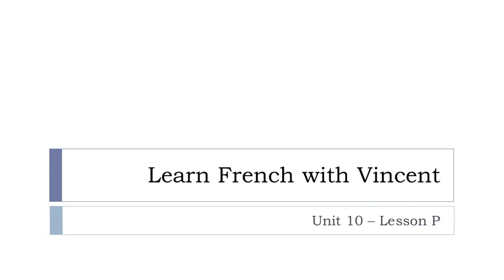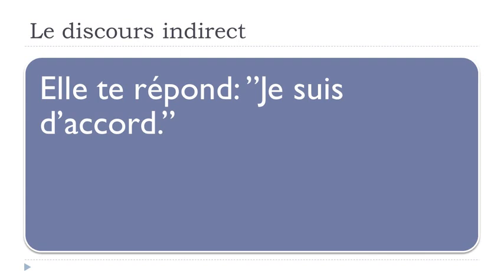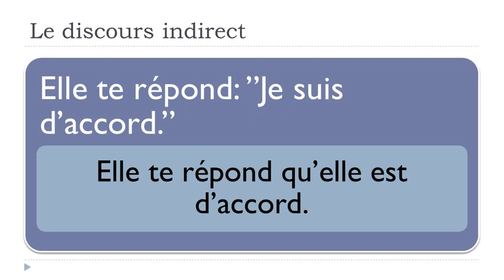Bonjour à tous and welcome to Learn French with Vincent. This is Unité 10, Leçon P — the last lesson regarding this discours indirect, but quite an important one because we'll discover les modifications de temps. Let's start with a simple example: elle te répond, je suis d'accord. Répondre is 'to answer', te is 'for you', so she answers to you, je suis d'accord means 'I do agree'.